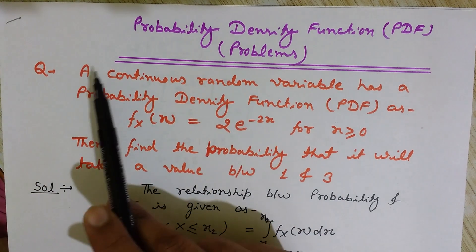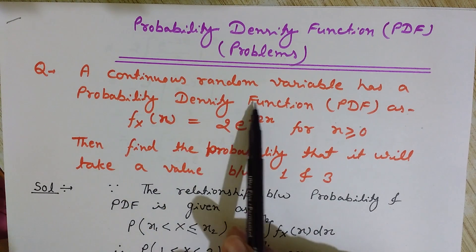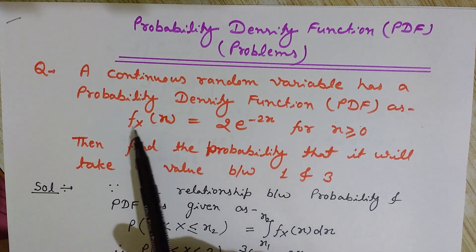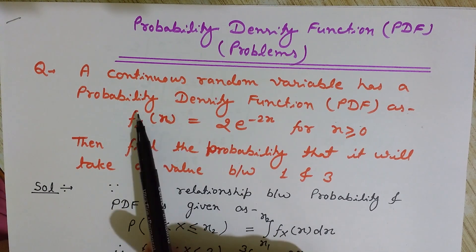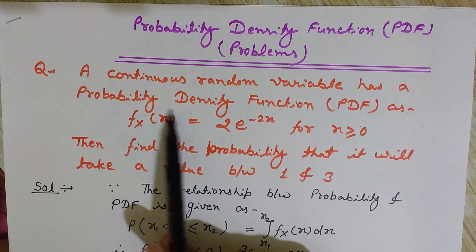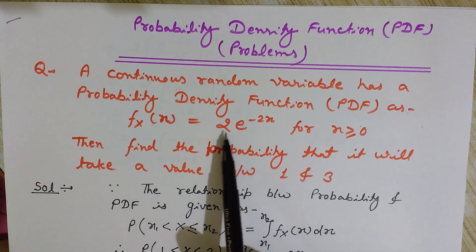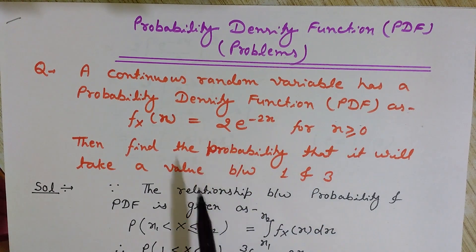The problem is: a continuous random variable has a probability density function given by f(x). This is the notation for probability density function—f for PDF, and F we use for cumulative distribution function. This PDF is given by 2e^(-2x) for x greater than or equal to 0.